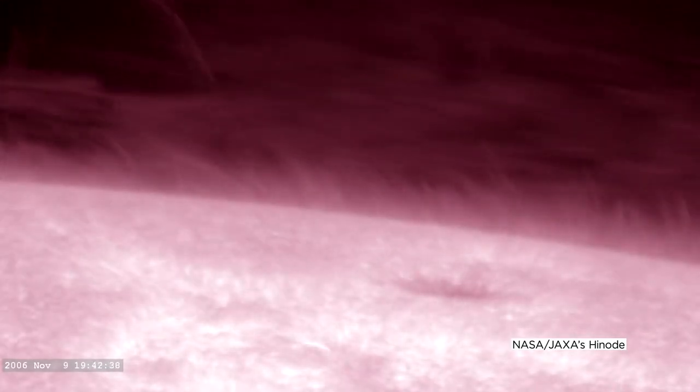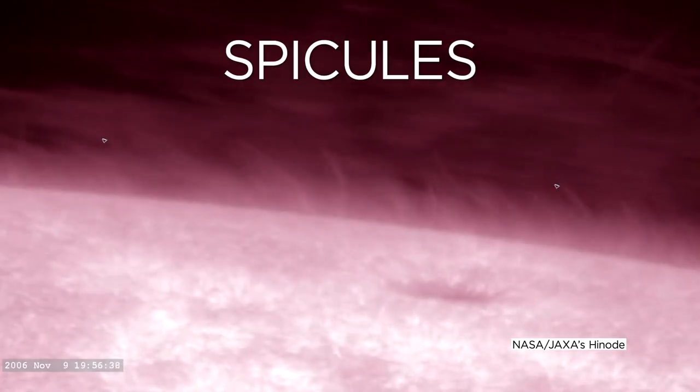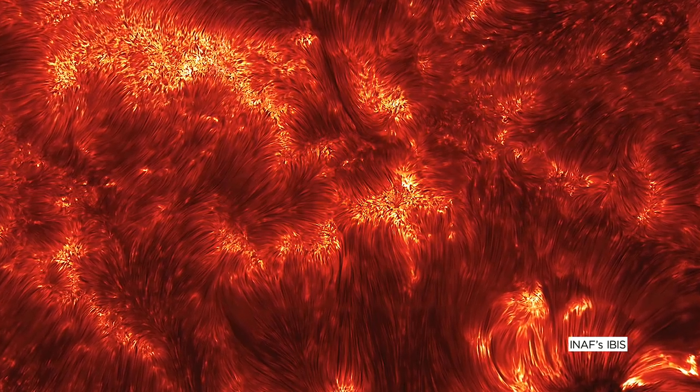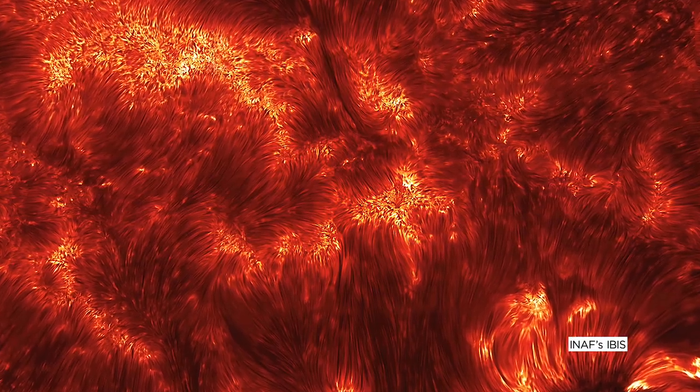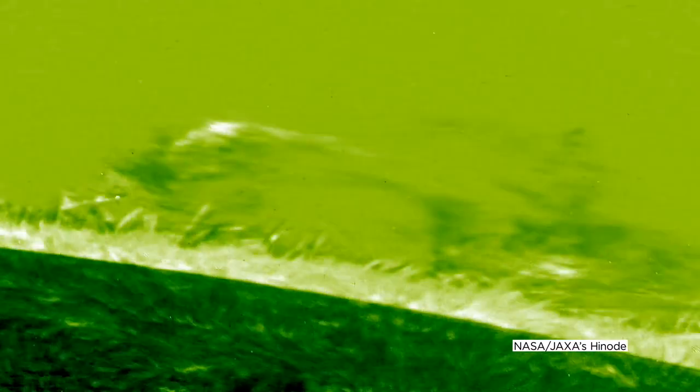A new NASA-funded study has revealed the origins of spicules, lengthy jets of plasma on the sun's surface. Scientists have been observing these long strands of solar material since the end of the 19th century, but their origins have been difficult to study because they're highly dynamic and short-lived.